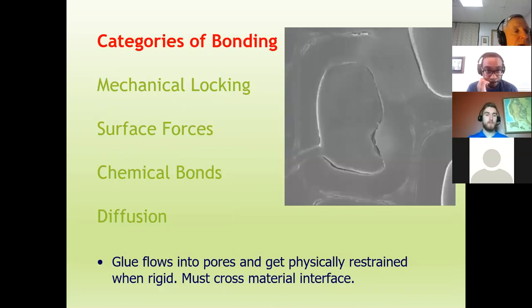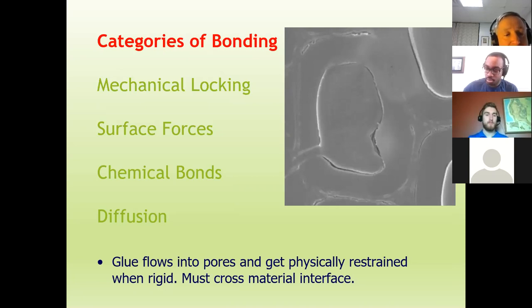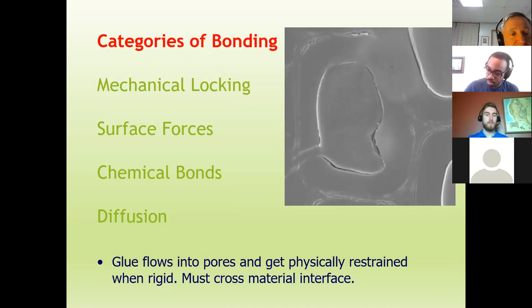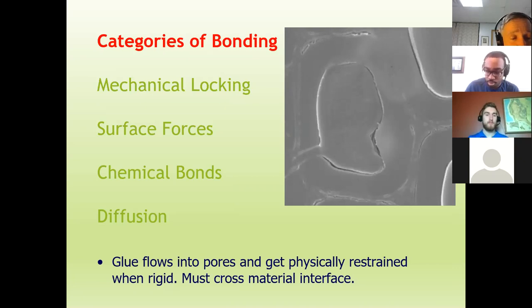There are four categories of bonding. First is mechanical locking — what you're looking at is a micro-photograph of an adhesive inside a pore of another material. All surfaces have roughness, even glass — that's how geckos can walk. The liquid adhesive flows into the pores, and when it hardens you get a mechanical lock, which is a very strong thing.